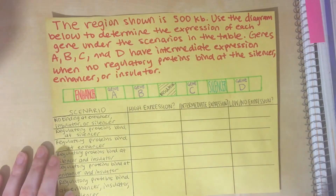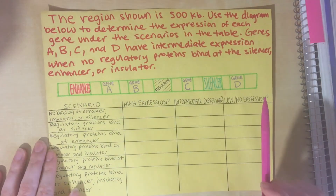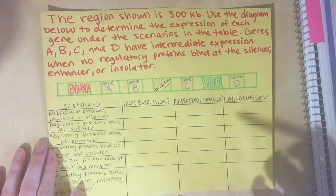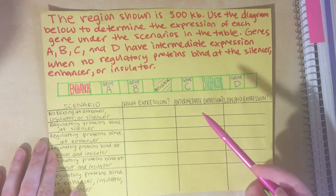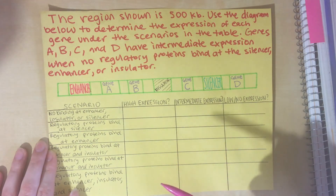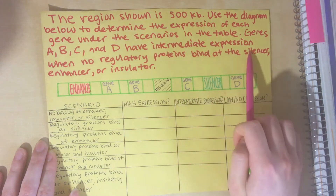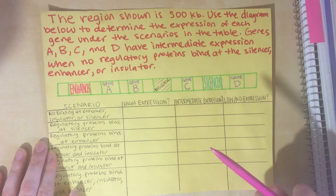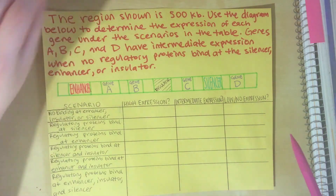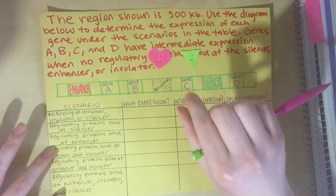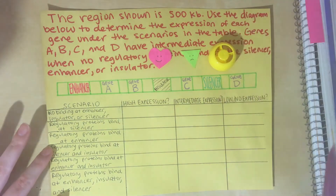Now let's look at our practice problem. We should take note of the length of the region — in this case, we're working in a gene region of 500 kilobases. This indicates that any of the genes in this region could be influenced by the enhancer or the silencer, given that enhancers and silencers can be either upstream or downstream of the transcription start site. The problem also states that each gene has intermediate expression when no regulatory proteins or transcription factors are bound to the enhancer, silencer, or insulator. I'll be using a pink heart to represent an activator protein, a green triangle to represent a repressor protein, and a bottle cap to represent an insulator protein.